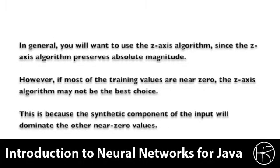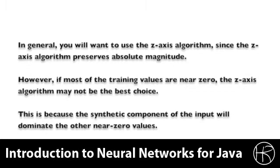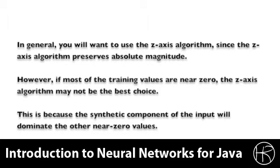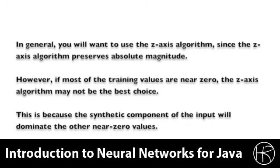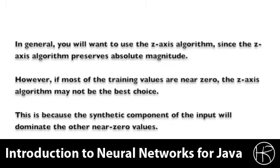You may be wondering when you want to use each of the two normalization types. In general, you'll want to use the z-axis algorithm because it preserves the absolute magnitude of the values, which allows for more accurate training. However, if most of the training values are near zero, the magnitude is not going to matter as much and the z-axis algorithm might not be the best choice — it might be best to go with the more traditional multiplicative. This is because the synthetic component of the input will dominate the other near-zero values during training. You can also simply resort to trial and error, as is often the case with neural network programming, to see which of the two methods performs best for your data.